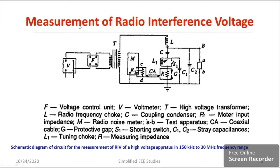This is the basic setup for measuring radio interference. The heart of the component is the radio interference meter. One more important information: you can measure the signal in the range of 150 kilohertz to 30 megahertz. Above and below this limit you cannot measure — that is the peculiarity of this meter. By using this setup we can measure the radio interference and check whether it is beyond the limit or within the acceptable level.